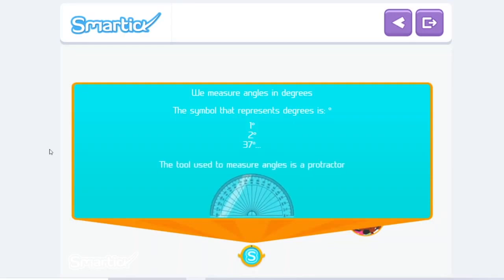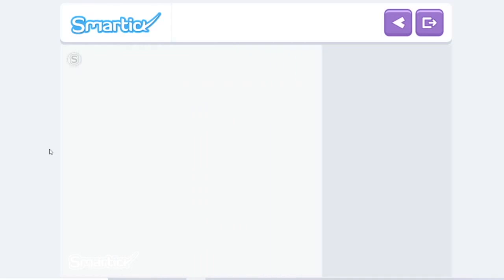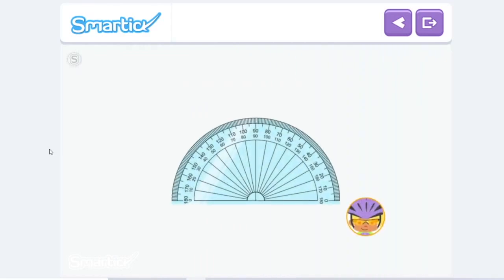The tool used to measure angles is a protractor. Eva is going to show Zoe how to measure angles with the protractor. On the curved edge, there are marks. Each one corresponds to a degree. With this type of protractor, you can measure angles from 0 to 180 degrees.